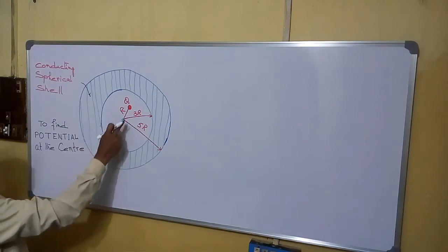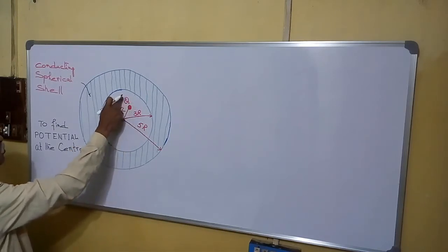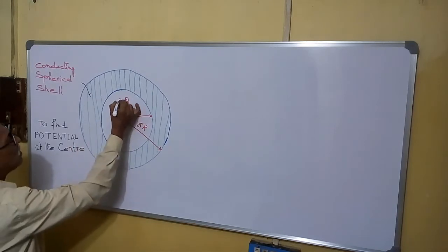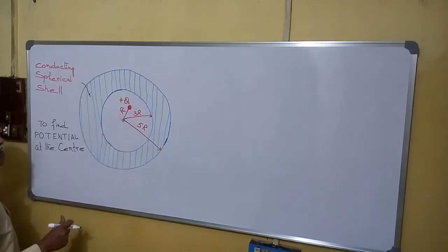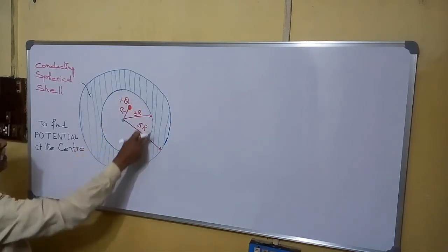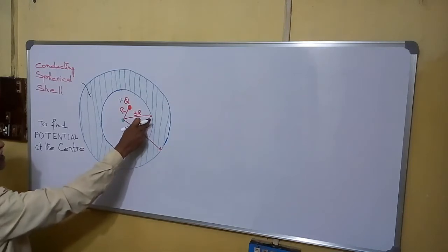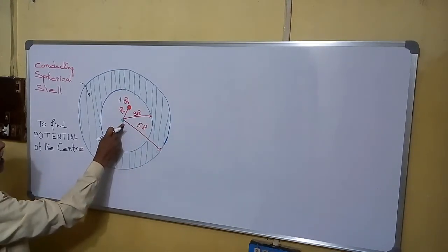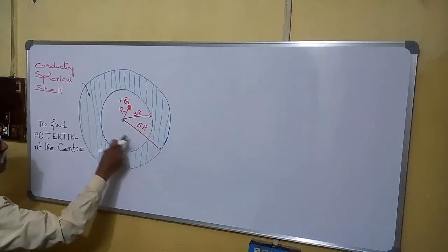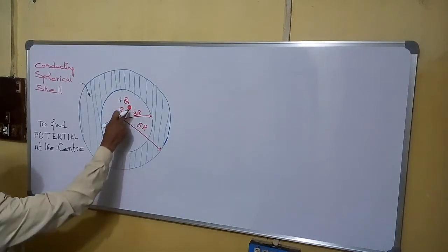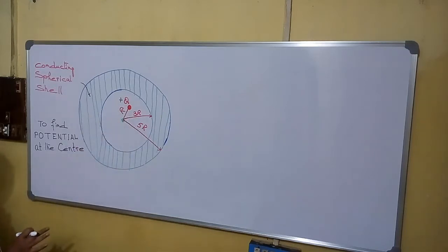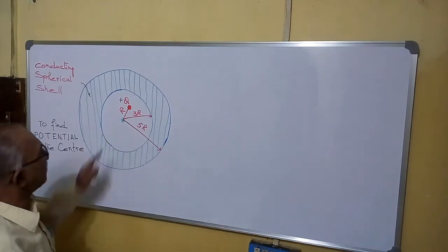See here, a point charge Q is placed here. We can more categorically say plus Q is here. The inner radius of the spherical shell is 3R and the outer radius is 5R, and this point charge is kept at a distance R from the center. What we are going to find? The potential at the center.